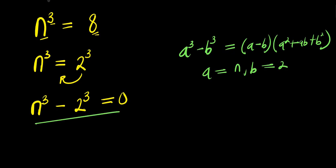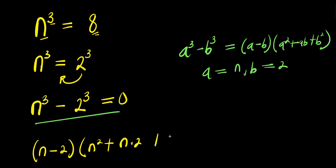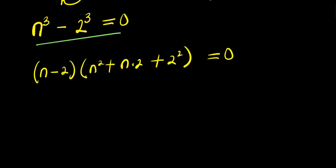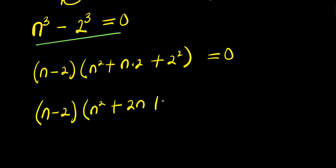Applying that identity here, we have (n minus 2) times (n squared plus n times 2 plus 2 squared) equals zero. Simplifying, this gives us (n minus 2) times (n squared plus 2n plus 4) equals zero.